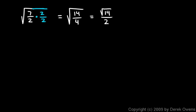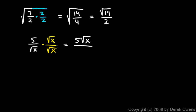The next example is 5 over the square root of x. This same technique works when variables are involved. To simplify this, I multiply by the square root of x over the square root of x, which will get the radical out of the denominator. Multiplying across the top gives me 5 root x, and on the bottom, the square root of x times the square root of x is just x. So this is considered simplified — even though it may not look simpler, I've accomplished the goal of getting the radical sign out of the denominator.